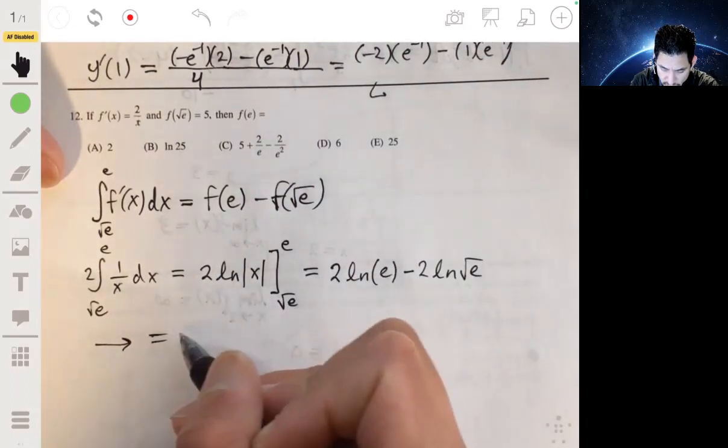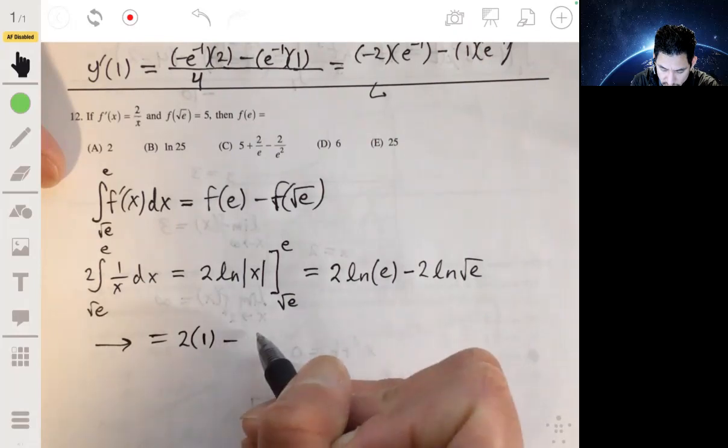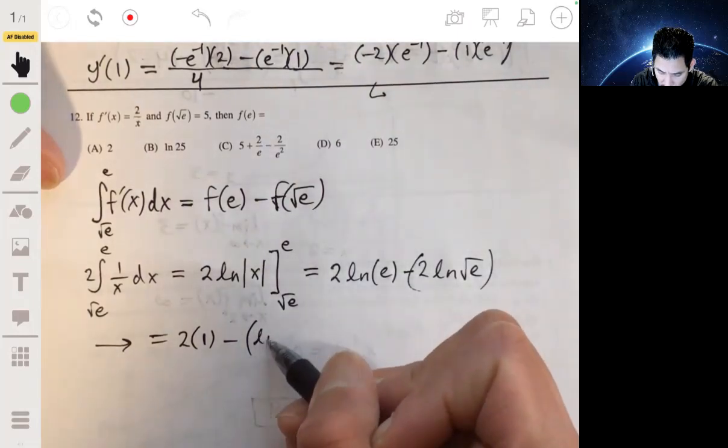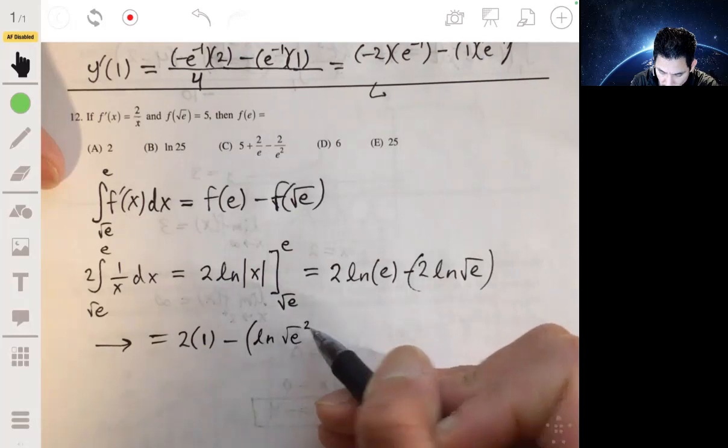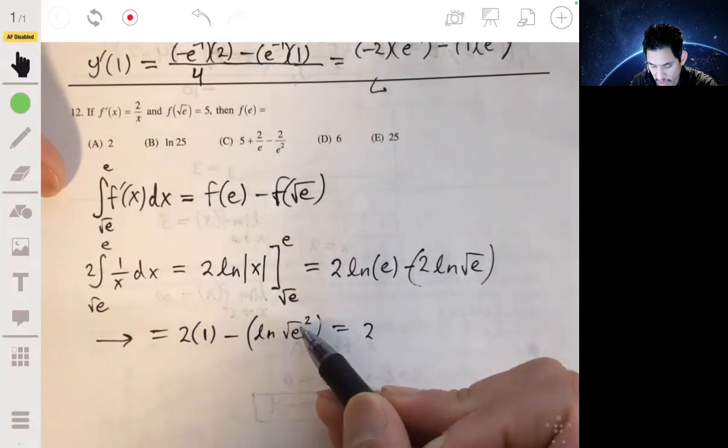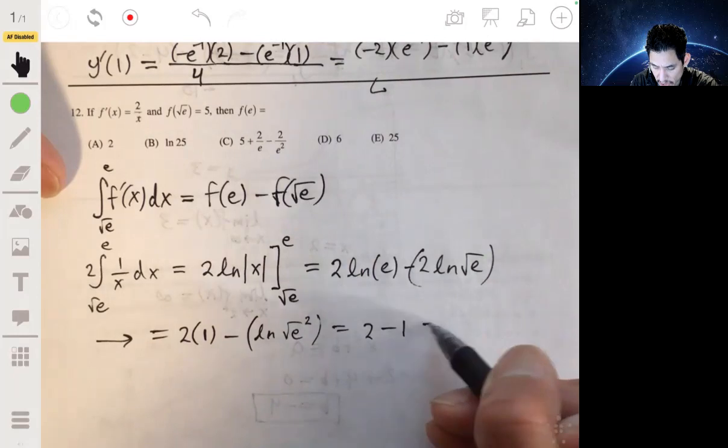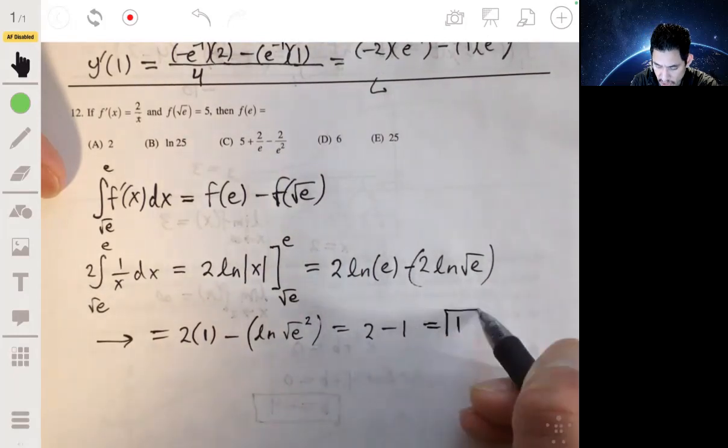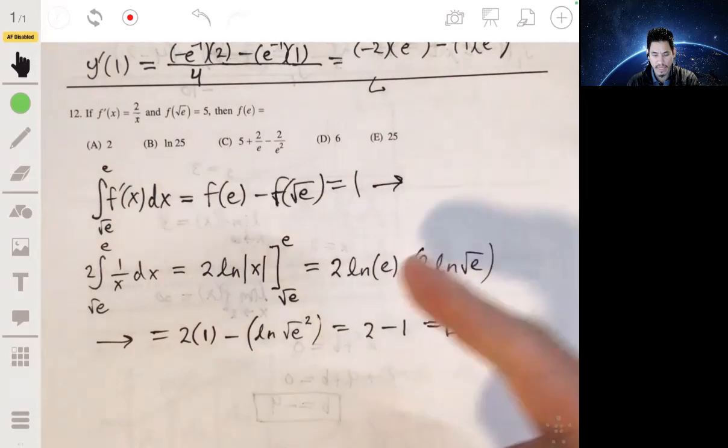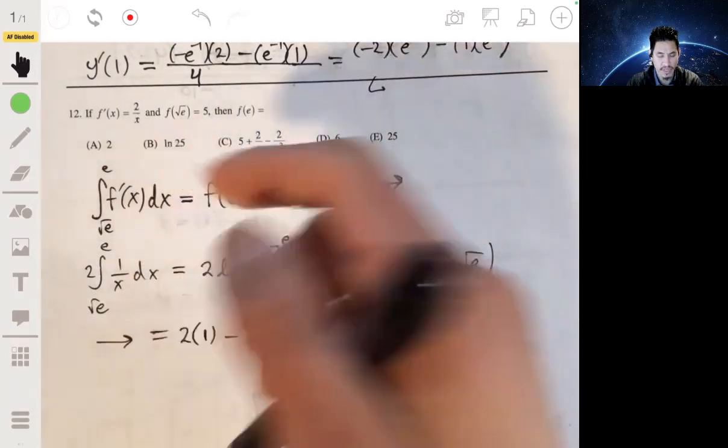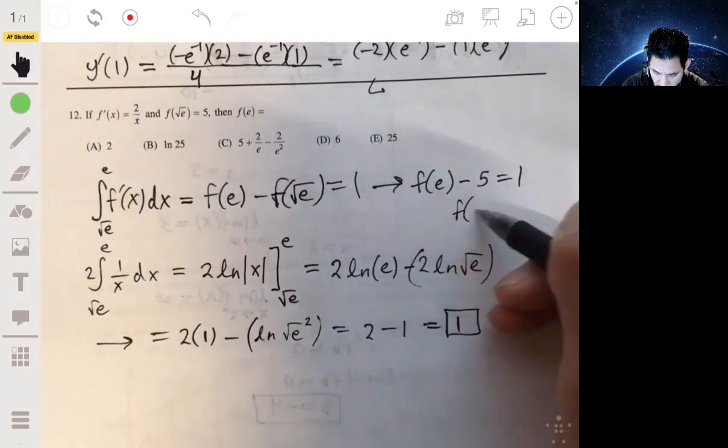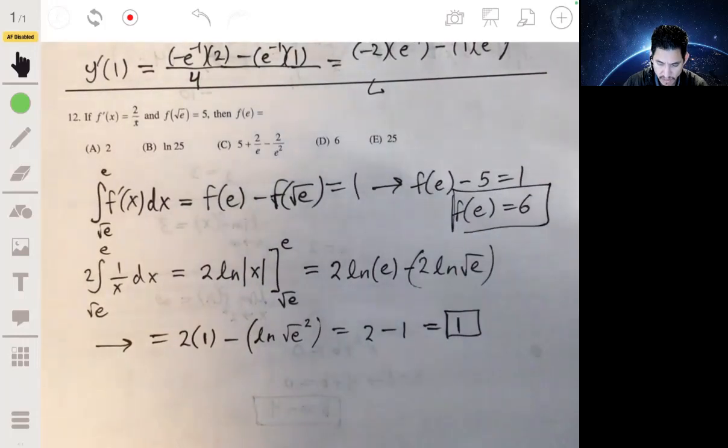The natural log of e is just 1, so 2 times 1 minus. So we're going to use the power rule here. Because you can basically go the natural log of (√e)², and so then it's just a natural log of e, which is also just going to be 1. So then 2 minus 1 is 1. So we just set this equal to 1 now. And we're given f(√e) to be 5. So f(e) minus 5 equals 1, add 5, then f(e) would just be 6. So the answer is d.